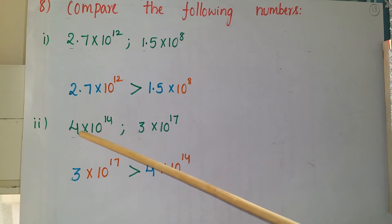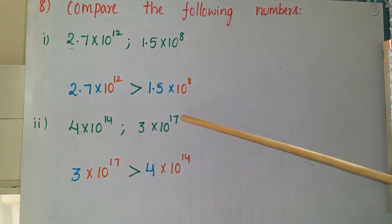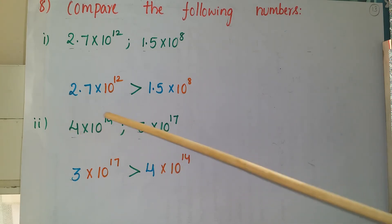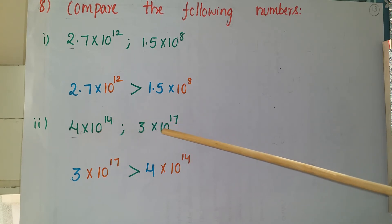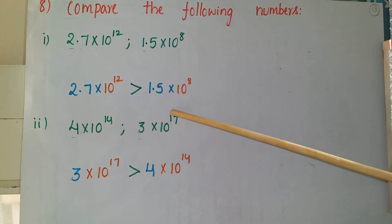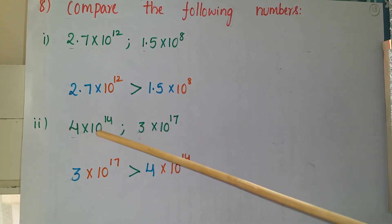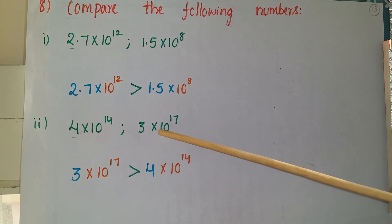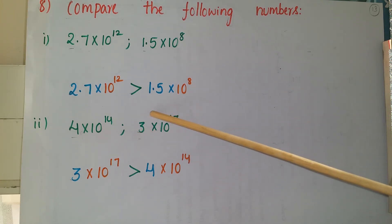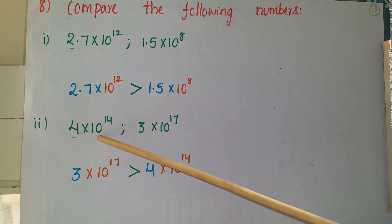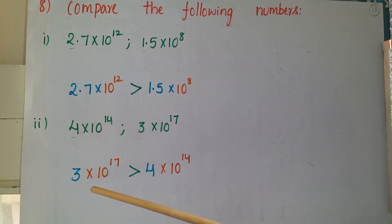Second comparison: 4 × 10¹⁴ versus 3 × 10¹⁷. The leading numbers are 4 and 3 — no decimal places, easy to compare; 4 is bigger. But compare the exponents: 14 versus 17. With 17 zeros after 3 versus 14 zeros after 4, multiplying 3 by 10¹⁷ gives a far larger number. So 3 × 10¹⁷ is greater than 4 × 10¹⁴.